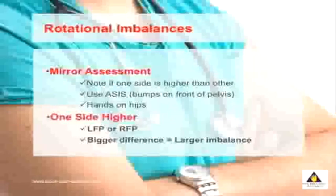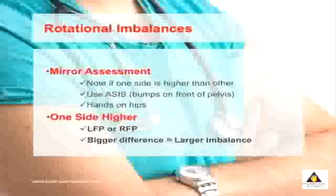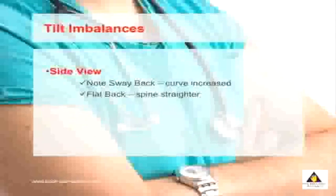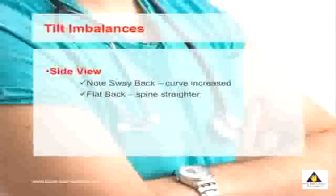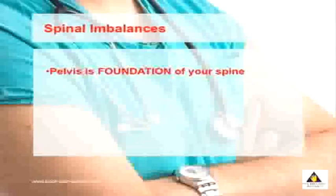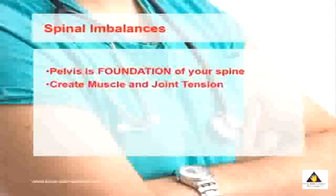If your left side is higher you have what's called an LFP, and if your right side is higher you have an RFP. The bigger the height change, the bigger the imbalance occurring in your spine. You can also look at the side view of your posture to detect a tilt-type imbalance — you may have a sway back where the curve in your low back is greater, or you may have a flattened spine. The pelvis is the foundation of your spine, and imbalances centered here can create pain throughout your spine, causing both muscle and joint tension.